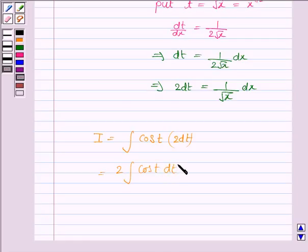Now we know that the integral of cos(t) is sin(t) + C. So this is equal to 2sin(t) + C.